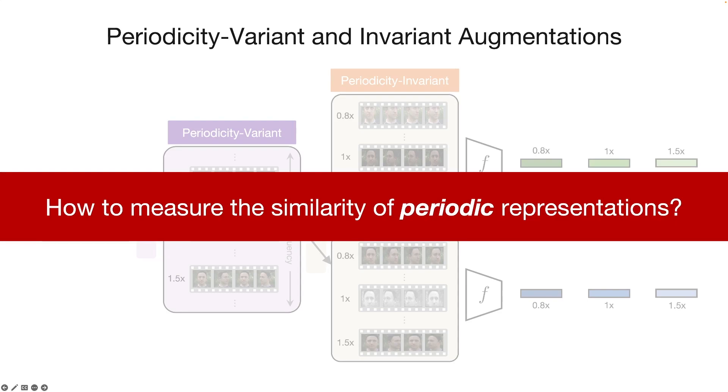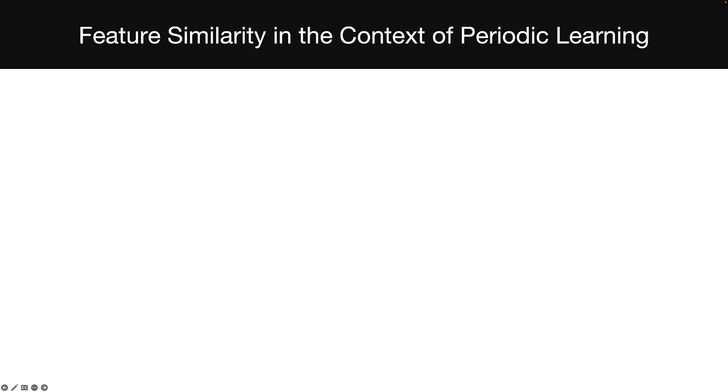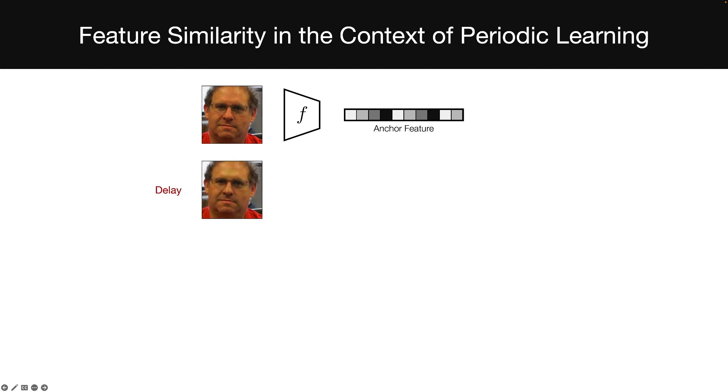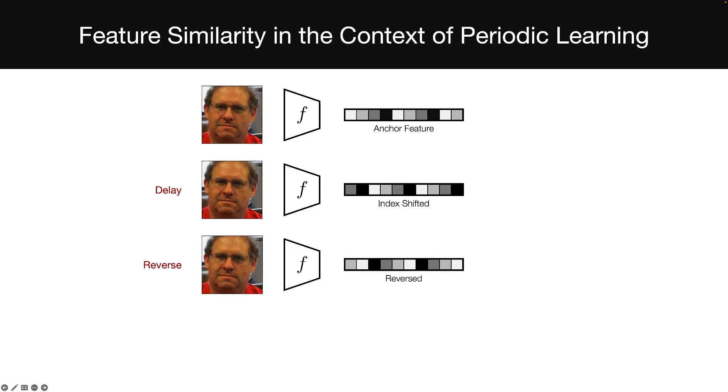Now, given these periodic representations, how should one measure the similarity of these features? We identify that the feature similarity is different in the context of periodic representations. Consider the heart rate estimation example where we denote the extracted periodic features as the anchor. If we delay the video by a few seconds, we can extract an index shifted version of the anchor feature. Further, if we reverse the video in the time domain, corresponding index reversed features would be generated. Finally, if we change the video speed, it results in frequency-changed features.